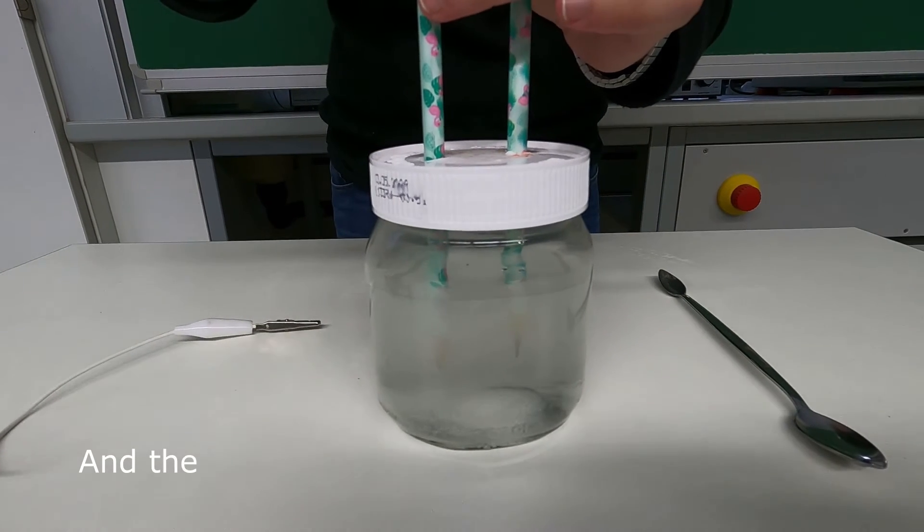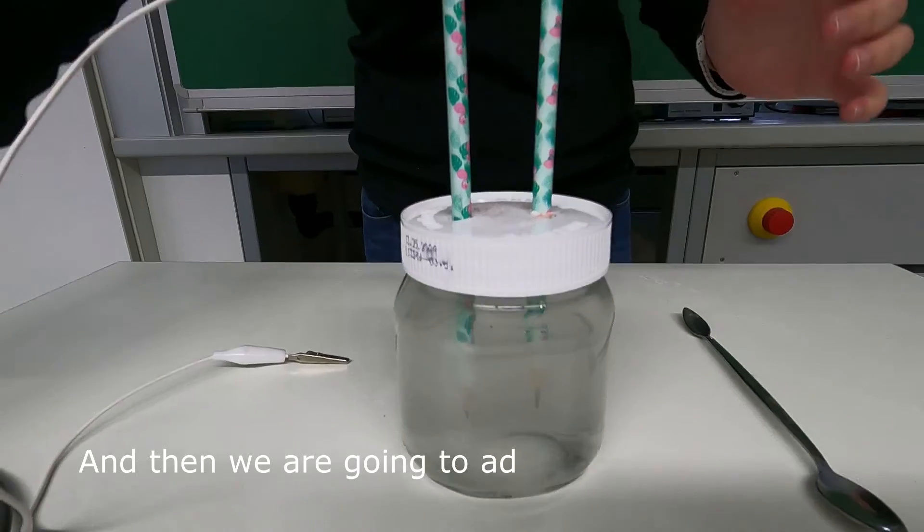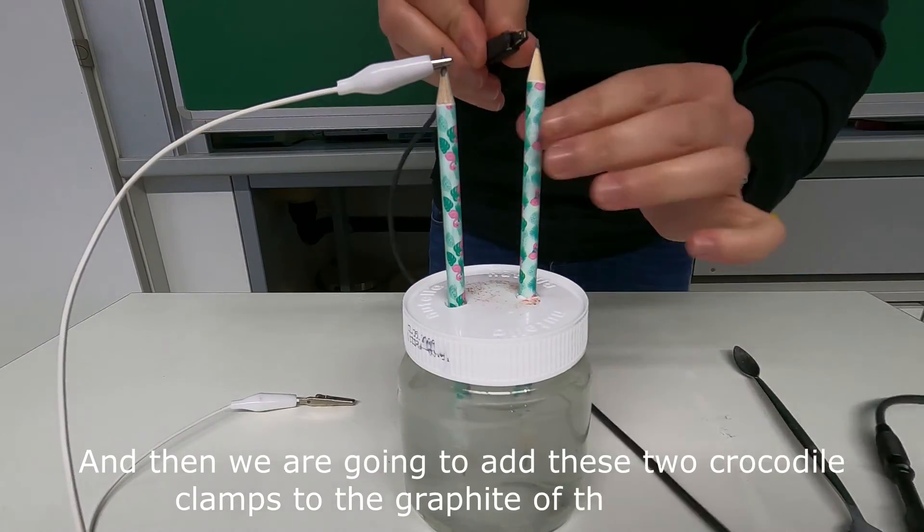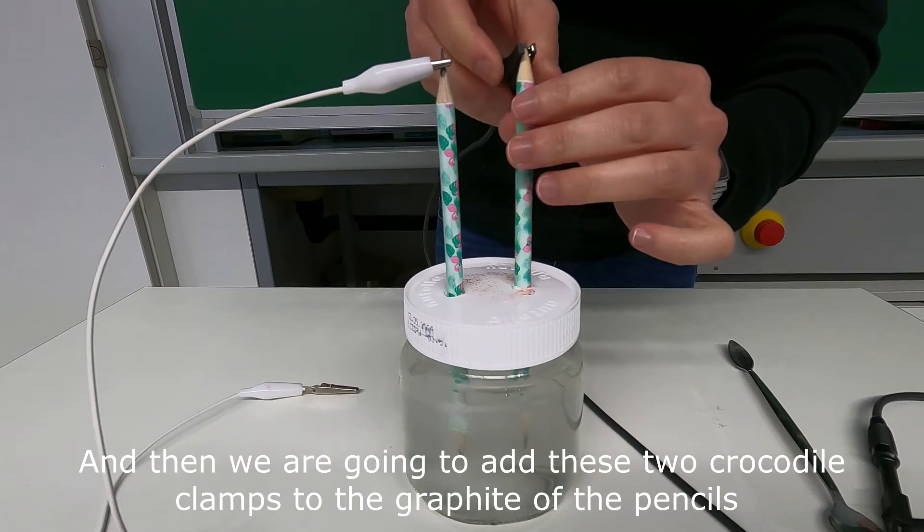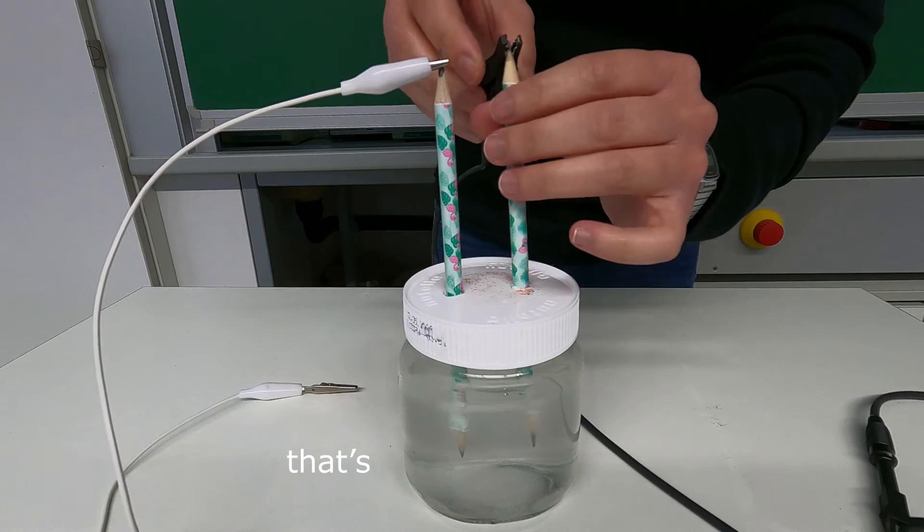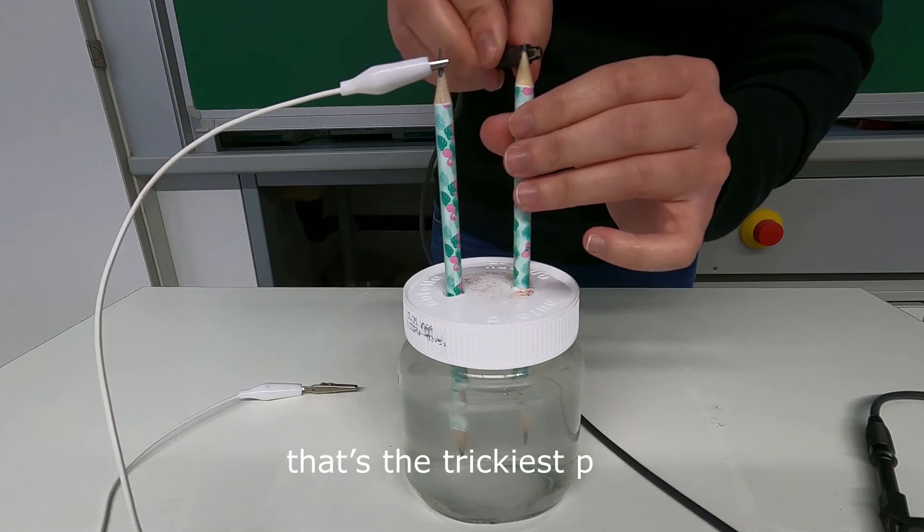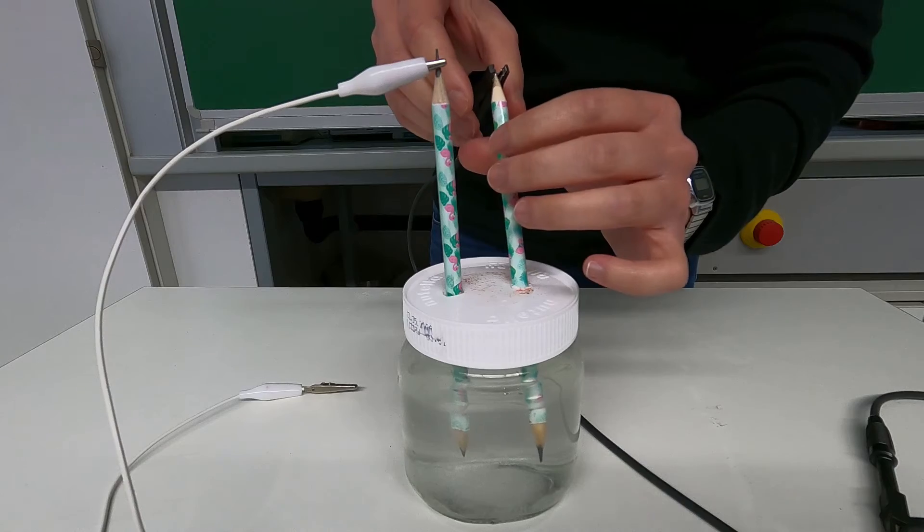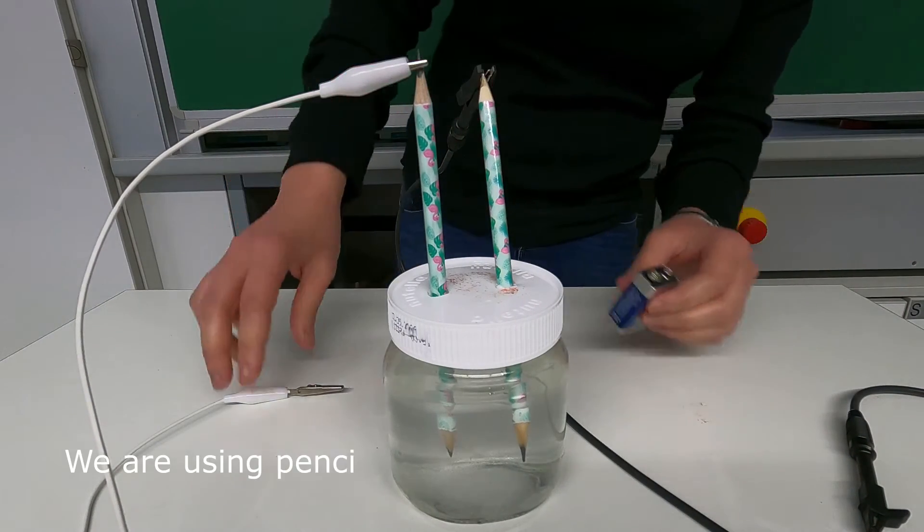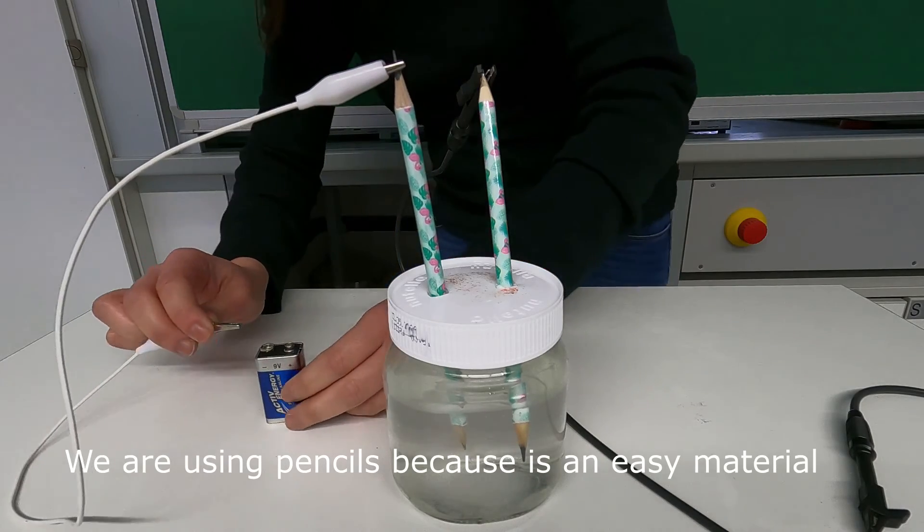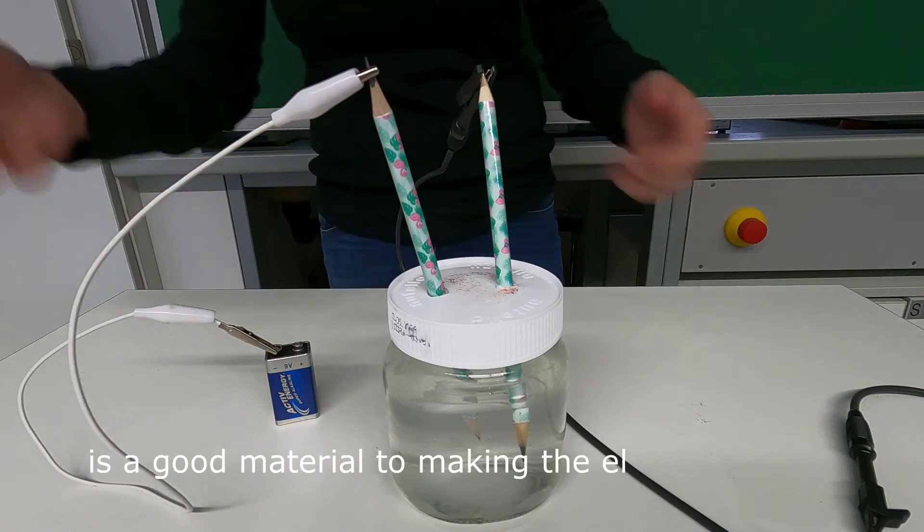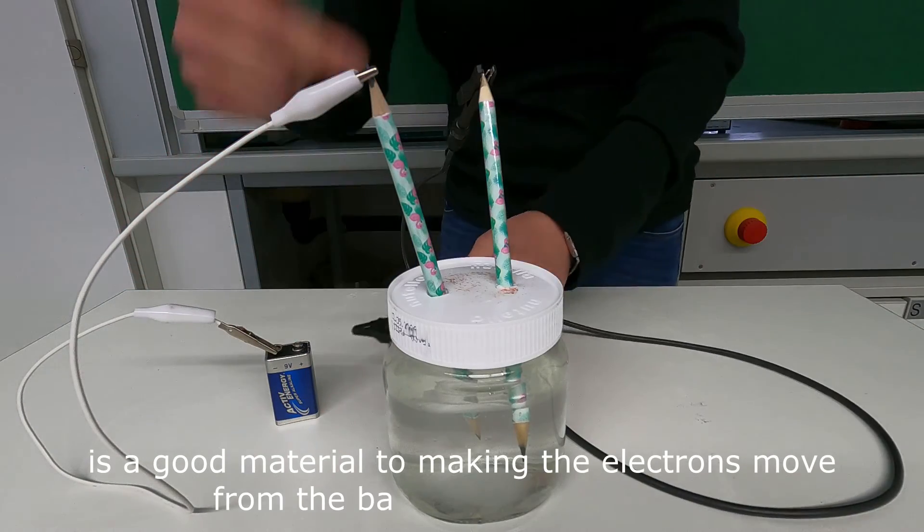And then we are going to add these two crocodile clamps to the graphite of the pencil. That's the trickiest part. We are using pencils because it is an easy material to find and moreover graphite is a good material for making the electrons move from the battery to the solution.